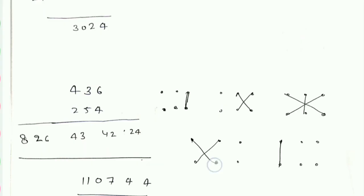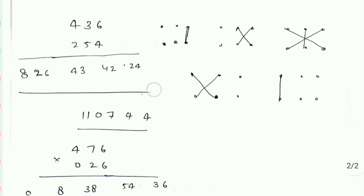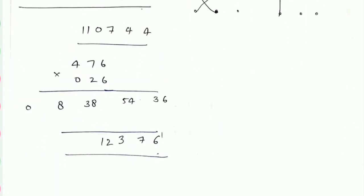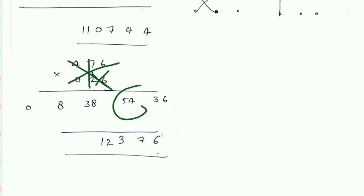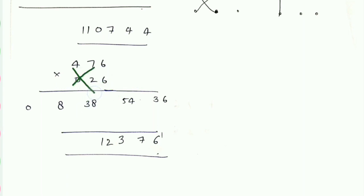इसी प्रकार से अगर यहाँ 2 digit नीचे हो और ऊपर 3 हो — 3 into 2 का multiplication हो — तो उसको भी इसी प्रकार से देखेंगे। ऊपर 0 write down कर लेते हैं, फिर same method: पहले इन दो को करेंगे — 66, 36। फिर 67, 26, 54। फिर इन 3 को करेंगे: 4×9 और 6×4 और 7×2 — तो 38 आ गया। Result: 6, 7, 6।